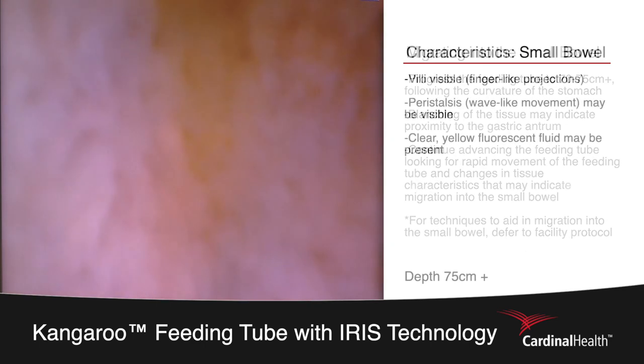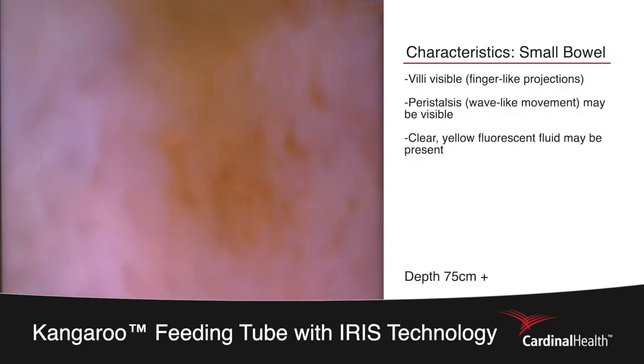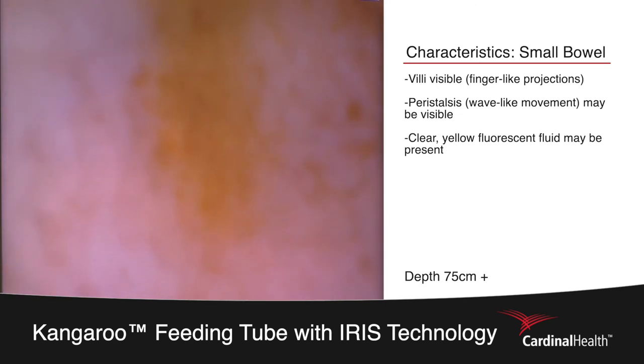We now see a change in the tissue. The tissue of the small bowel is covered with a finger-like projection called villi, that will move around the feeding tube in a wave-like fashion.